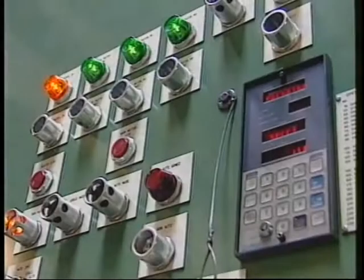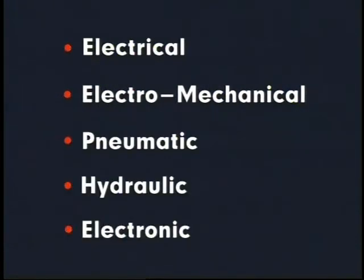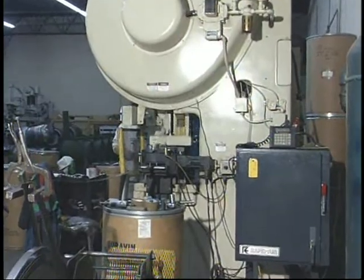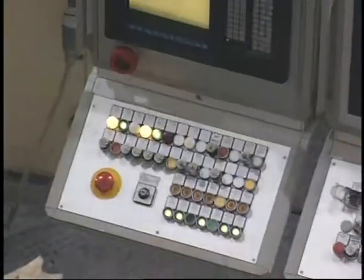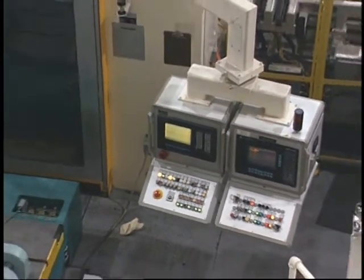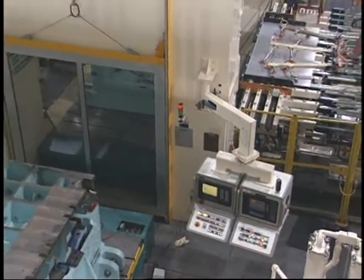Press controls involve electrical, electromechanical, pneumatic, hydraulic, electronic, and other equipment used to control the operation of presses. Complexity of controls ranges from a simple starter and disconnect switch to a sophisticated multi-motor, multi-function control incorporating a variety of sensors, control systems, and devices.